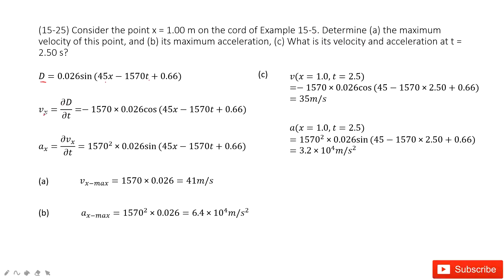So ∂D/∂t, we can get the velocity. And then doing this derivation, we get the function look like this one. Sine becomes cosine, and then because of the t, this term comes out.